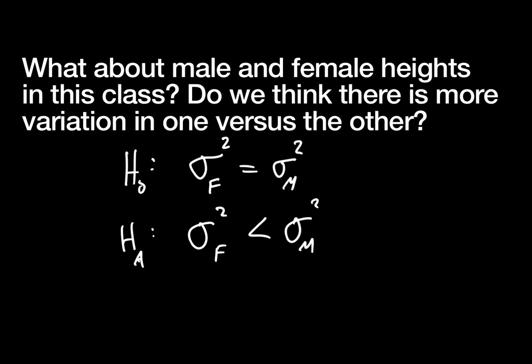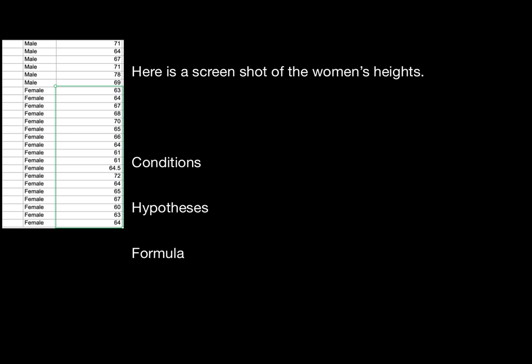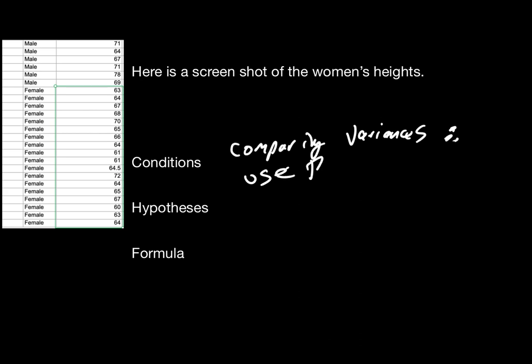I took a screenshot of a portion of the data. We have fewer females in the class — this is all the female heights from when they filled out the survey at the beginning of the semester, from our class and the other class. These were the heights of the females. For conditions: I am comparing variances, therefore use the F-distribution — the F-test.